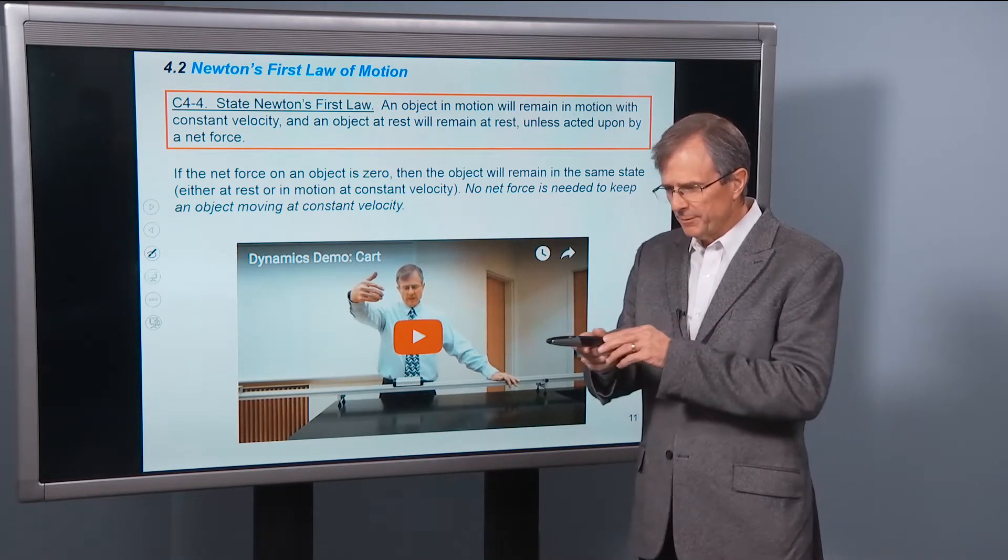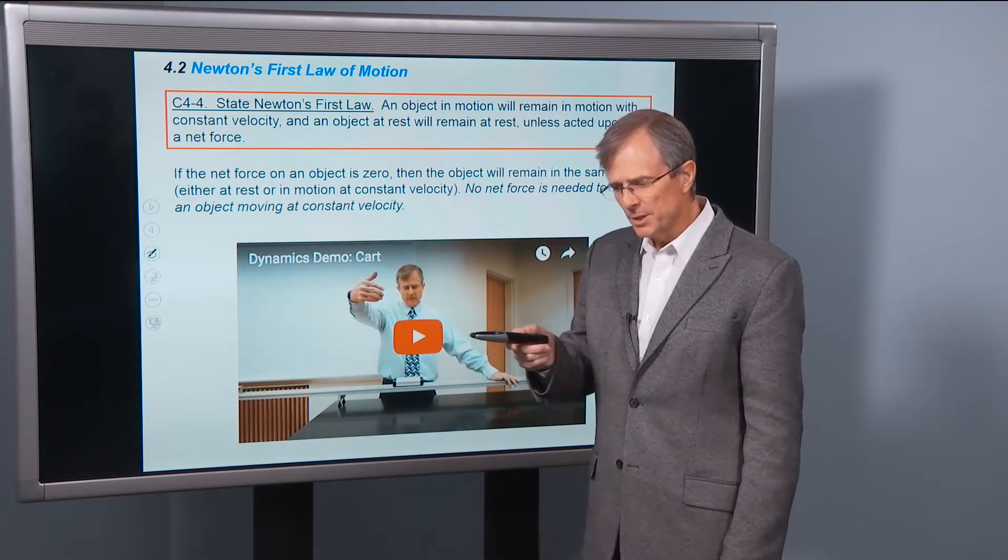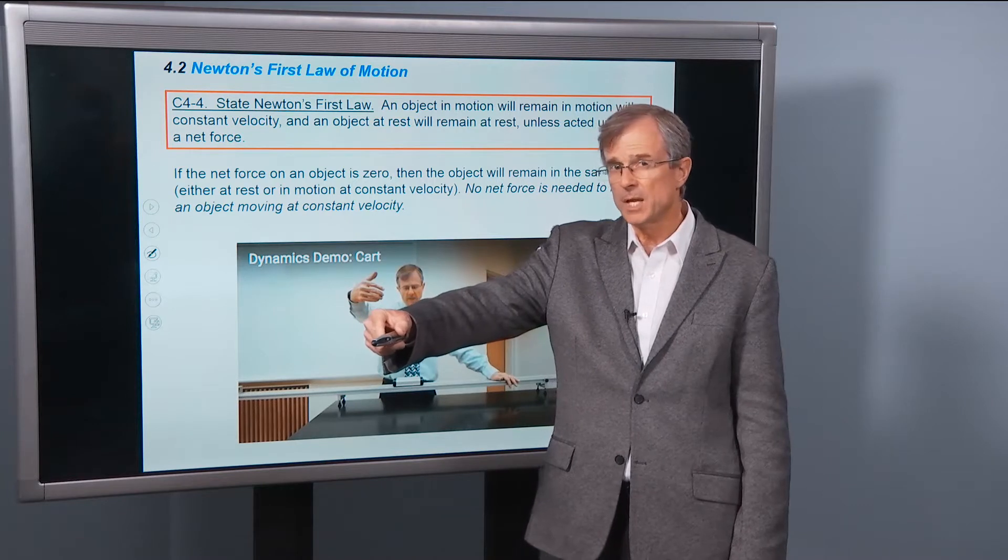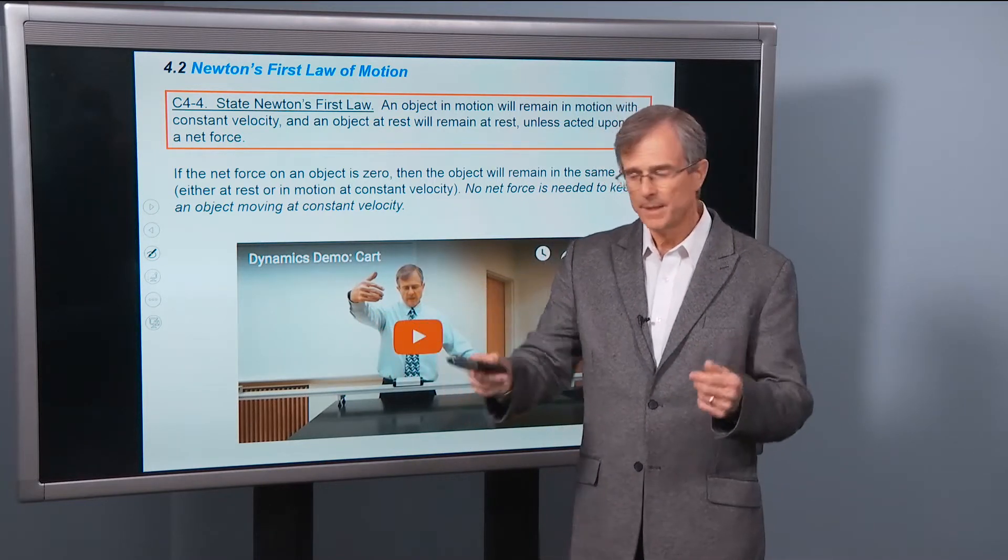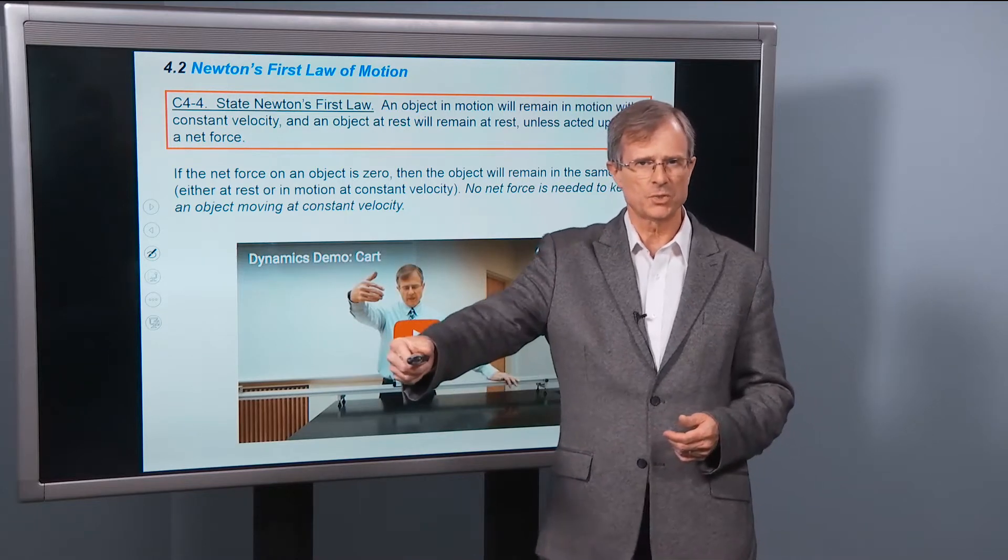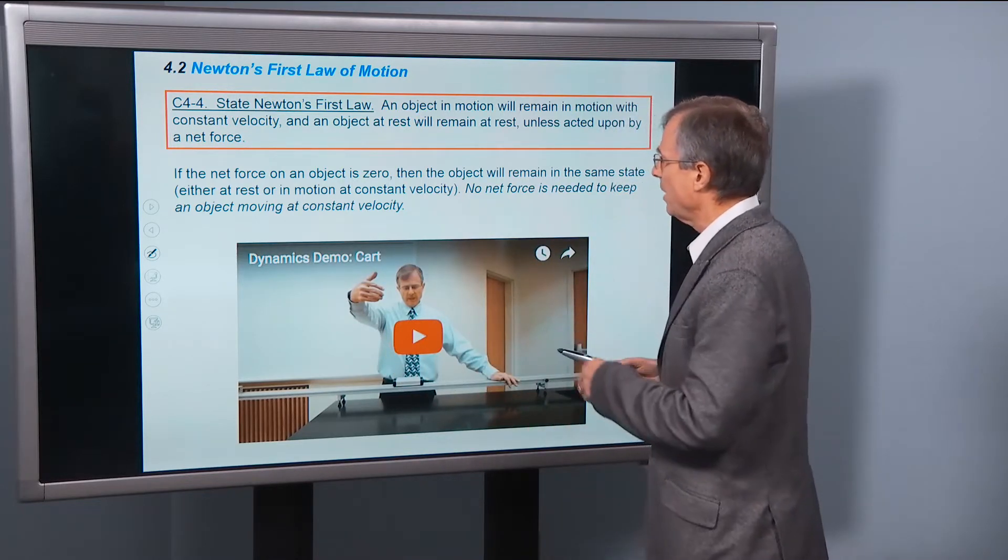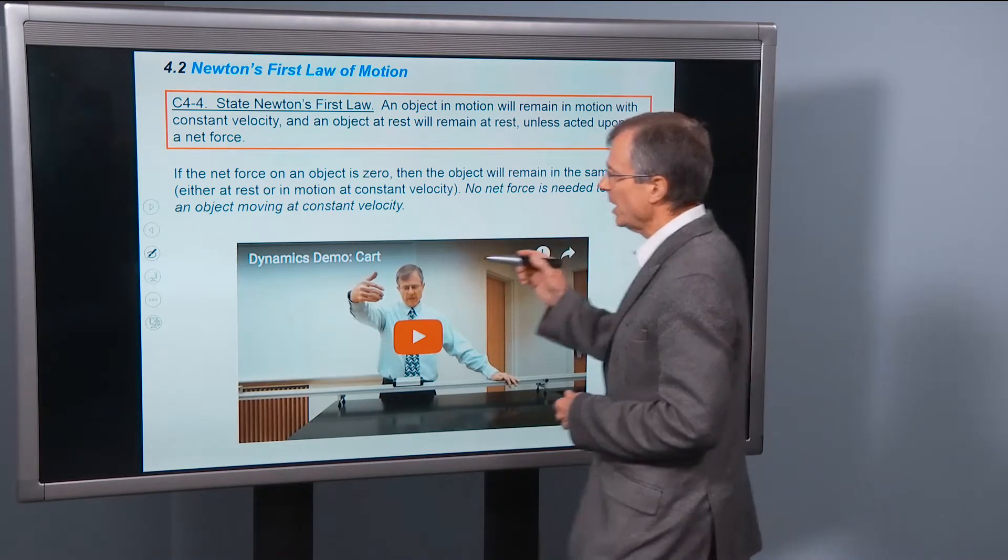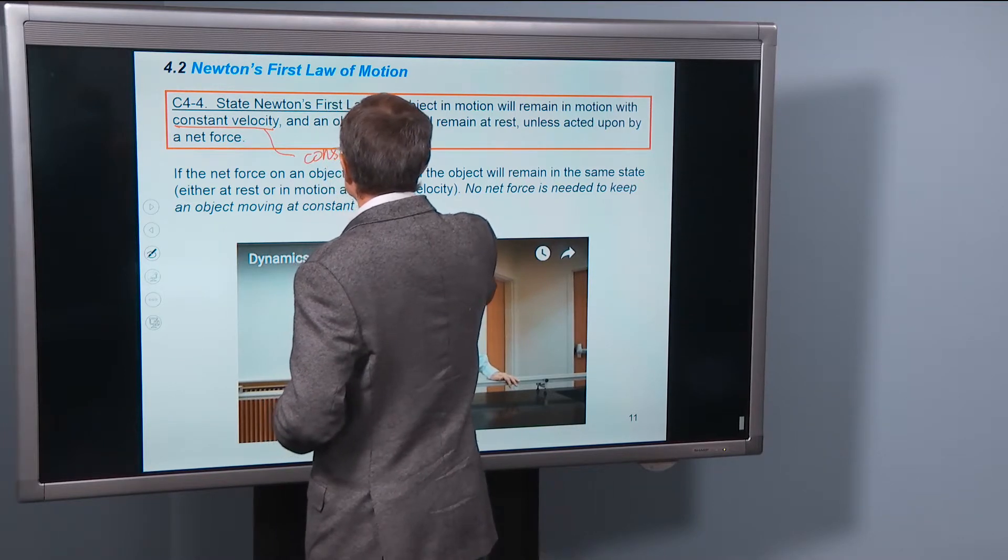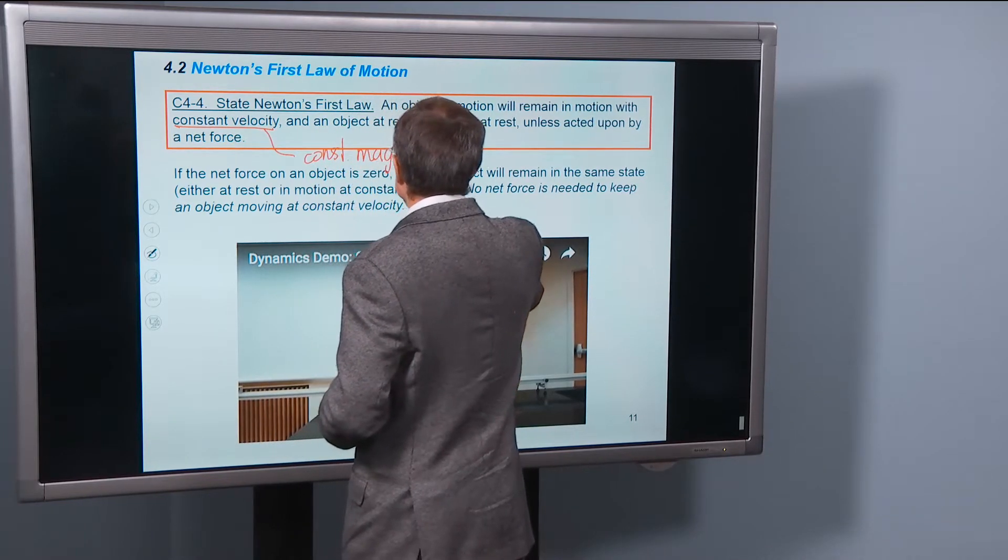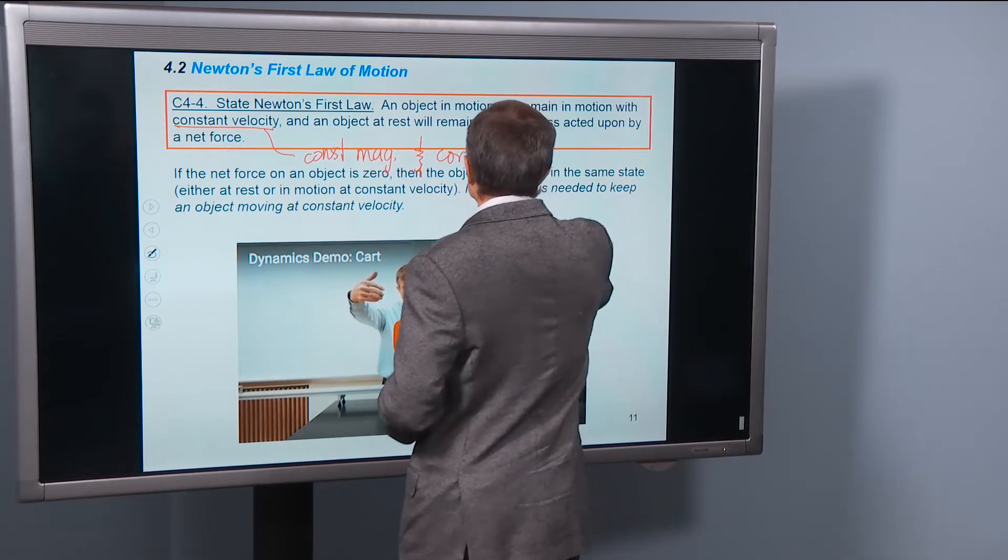So you can be going along 55 miles an hour, and even though you're still going 55 miles an hour when you go around a turn, your velocity is not constant. Your speed is, but your velocity isn't. Why? Because the direction of the velocity is changing. So here what we're talking about in Newton's first law is a constant velocity. This means constant magnitude and constant direction.